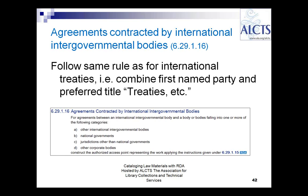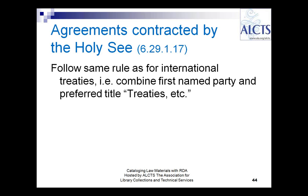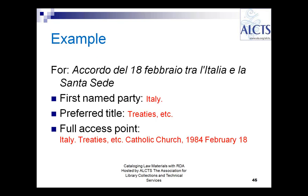For agreements contracted by international intergovernmental bodies, you basically follow the same rules as for international treaties, using the first-named party and the preferred title 'treaties, etc.' — for example, the agreement between the UN and the World Intellectual Property Organization. For agreements contracted by the Holy See, you again follow the same rule as for international treaties — for example, an agreement between Italy and the Holy See, starting with the first-named party and the preferred title, then the other party and the date.